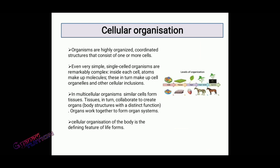The next characteristic is cellular organization. Unicellular and multicellular organisms all have cellular organization. In multicellular organisms, cells form tissues, tissues form organs, organs form organ systems, and organ systems make up the organism. This is the same for both plants and animals.